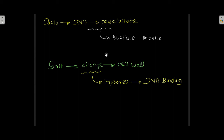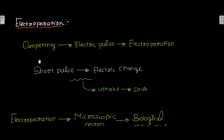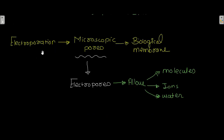Competency can also be achieved through electric pulses, and that process is known as electroporation. Electroporation utilizes a short pulse of electric charge to promote DNA uptake. It produces microscopic pores in the biological membrane known as electropores, and these electropores allow the exchange of molecules, ions, or water through the membrane, enabling DNA to enter the cell.